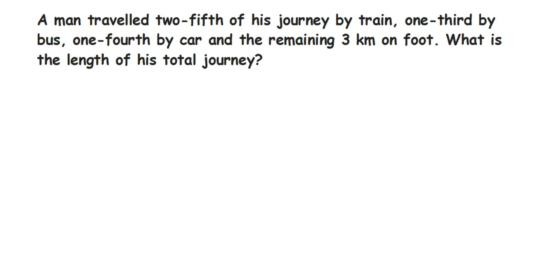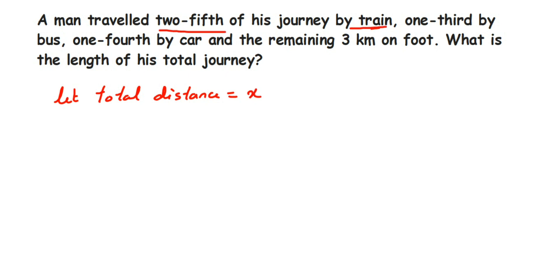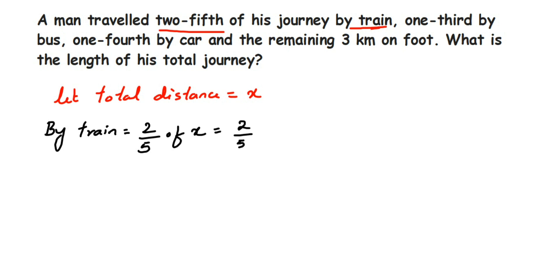So let the total distance of his journey be equal to x. Now, by train he travelled two-fifths of it. So by train it is equal to two-fifths of the total journey, and total journey is x. Since 'of' means multiplication, it is two-by-five multiplied by x, which equals two x upon five.